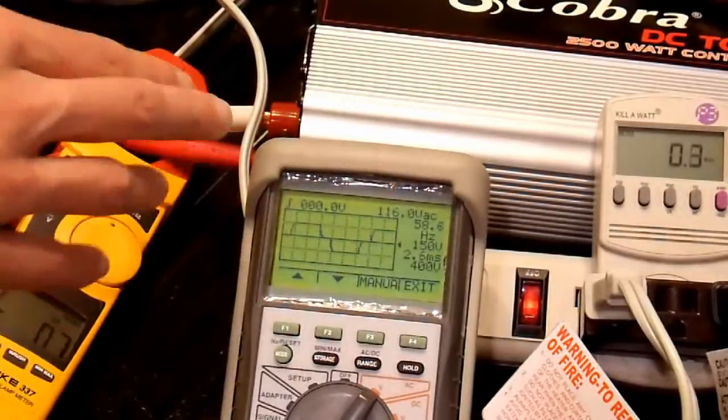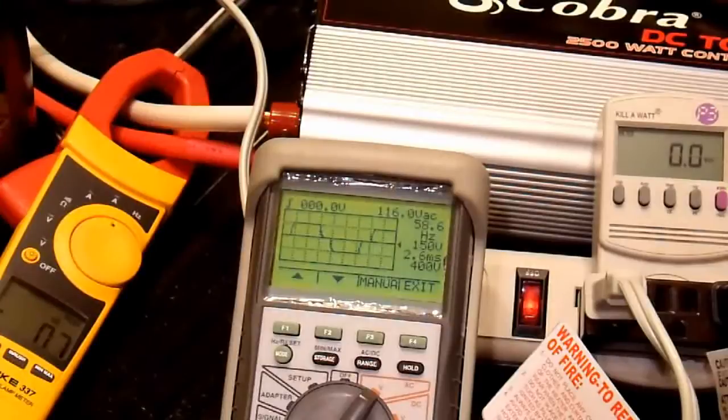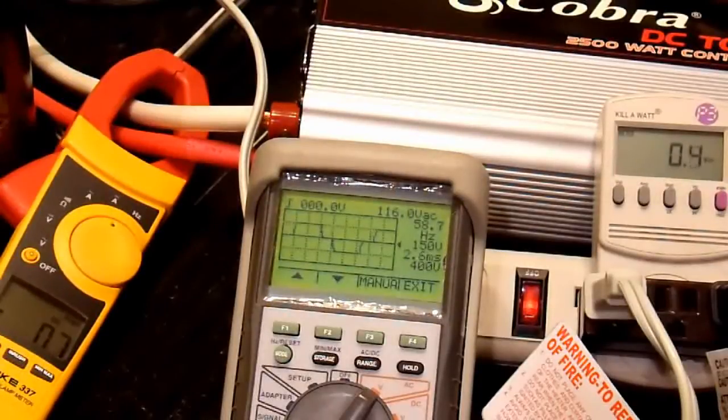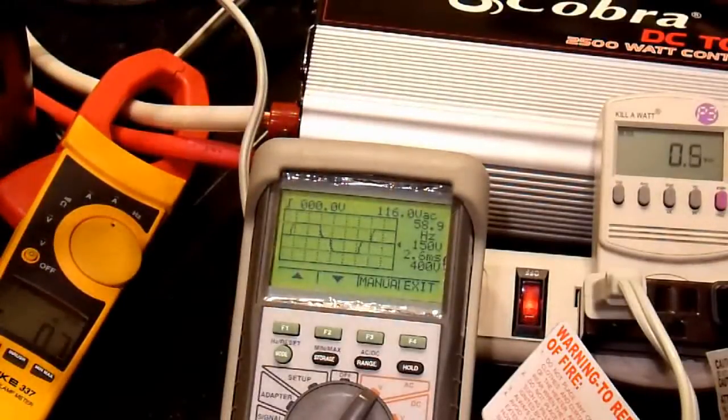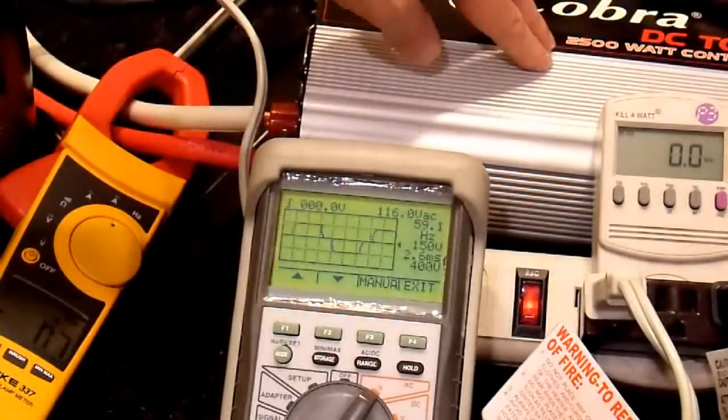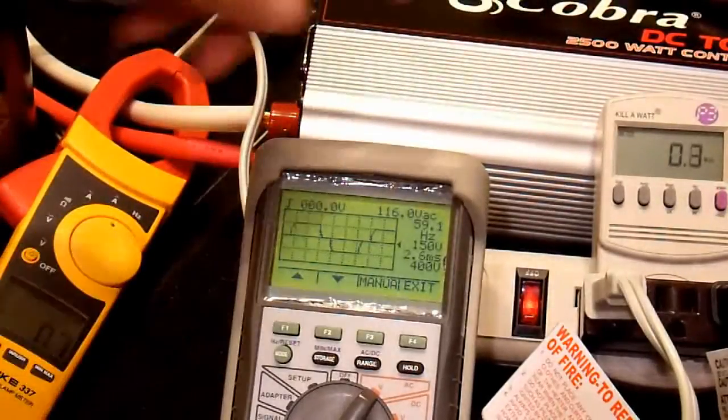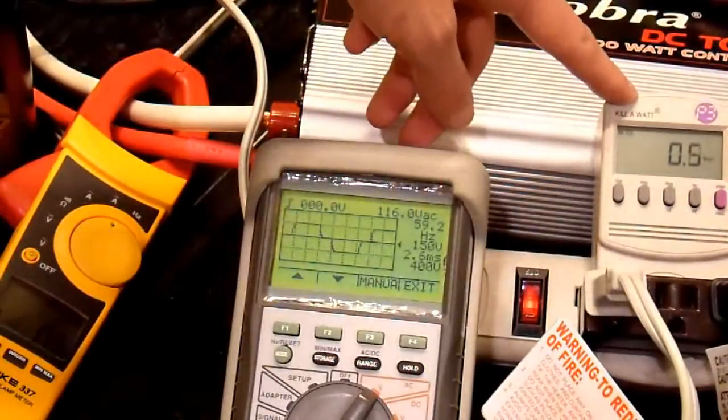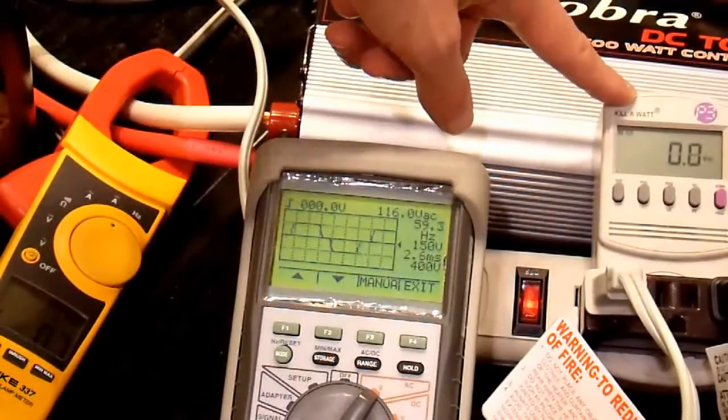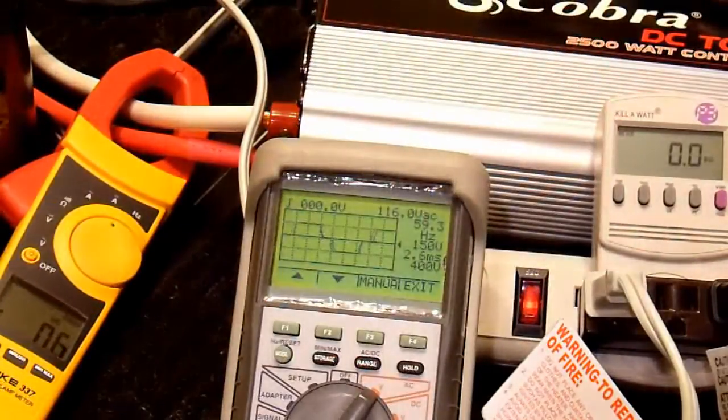But you can see that giving it better input power did resolve that problem. So next I'm going to see if I can load this down to its 2500 watt level. This kilowatt meter isn't rated for anything over about 1500 watts. So it's probably going to be unhappy, but it will still read output voltage.